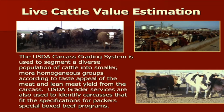When somebody is evaluating and estimating quality and yield grading of cattle in a typical production system, they're doing it on a pen basis. Rather than going out and looking at each individual animal and saying whether that animal is going to be a choice yield grade two, we can step back and look at a pen of steers or heifers and say they're going to be 70% choice, 28% select, and the balance falling into the standard category.